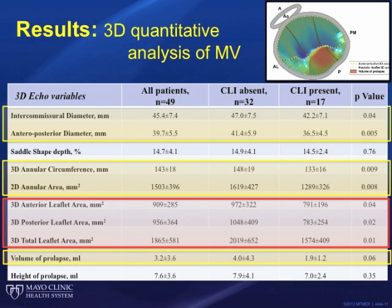Importantly, leaflet tissue area was markedly smaller in valves with cleft-like indentation versus those without, overall affecting both anterior and posterior leaflets.